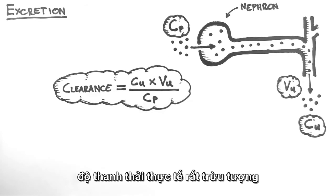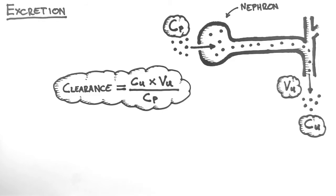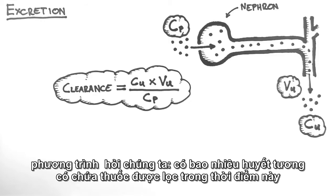The clearance is often very difficult to understand conceptually, so I'll try to simplify it as best I can. This equation asks, how much plasma contains the amount of drug being cleared at this time?